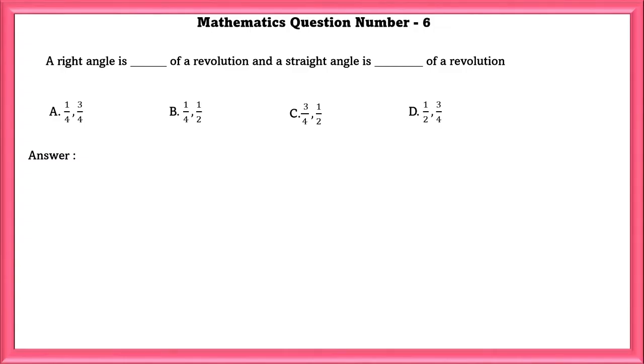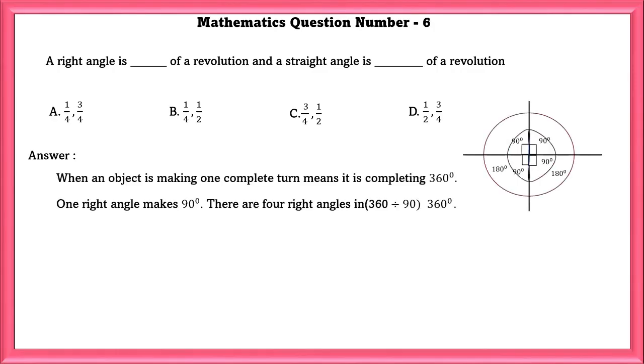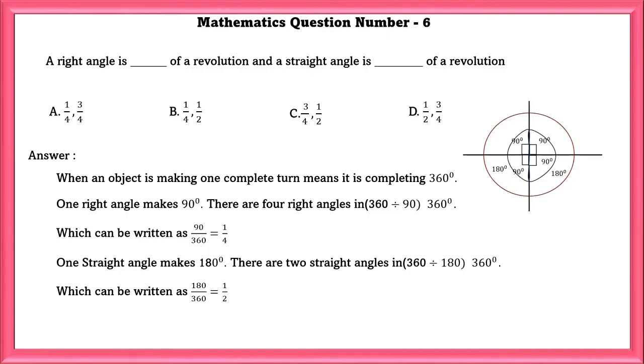Mathematics Question Number 6: A right angle is dash of a revolution and a straight angle is dash of a revolution. When an object is making one complete turn, it means it is completing 360 degrees. One right angle makes 90 degrees and there are 4 right angles in 360 degrees, which can be written as 90 by 360, which is equal to 1 by 4. Similarly, for the straight angle, one straight angle makes 180 degrees and there are 2 straight angles in 360. So, 180 by 360 is equal to 1 by 2. So, the answer is B.